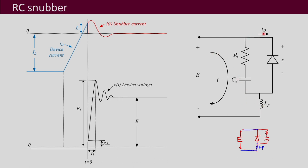The current the diode carries is represented by ID. Note the direction of the current: the positive direction of current is taken as opposite to the direction in which the diode conducts. The voltage across the device is denoted here by small e, and the current that flows through the snubber and through this loop is this current I. Capital E is the voltage the diode is supposed to block, and we are discussing the turn-off process.